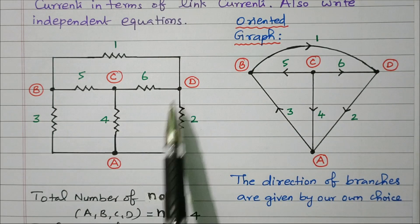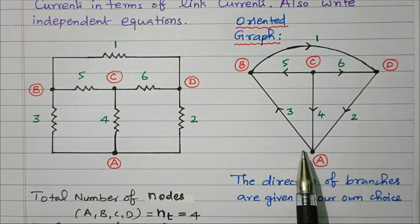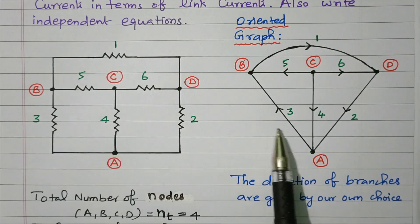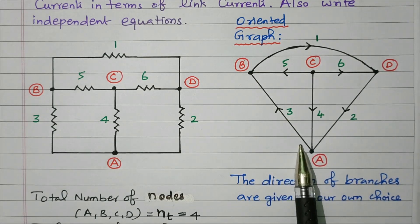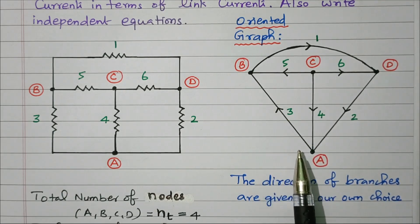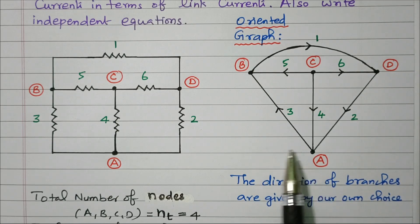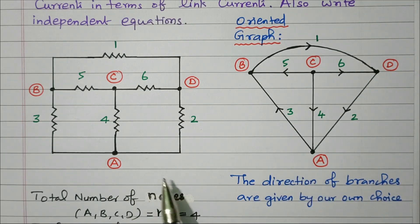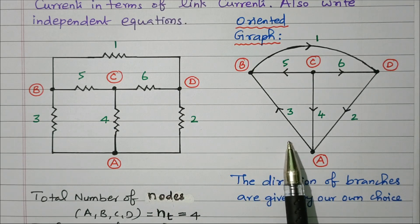The nodes B, C, D and A are available — four nodes. The branches are also represented: three, four, two, five, six and one. The resistors are replaced; only straight lines are drawn — this is called an oriented graph. The direction of branches are given by our own choice; the direction is not given in the original diagram, but by our own choice, directions are assigned. So first, we identify the oriented graph.